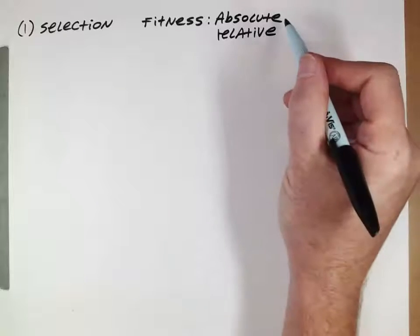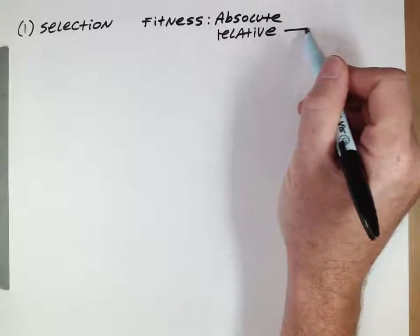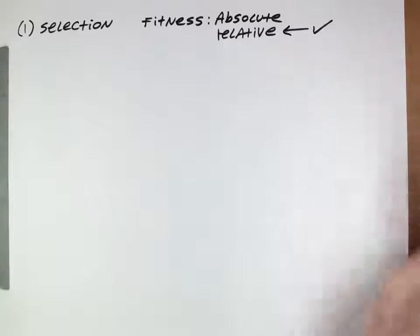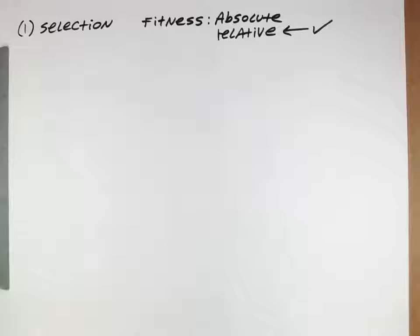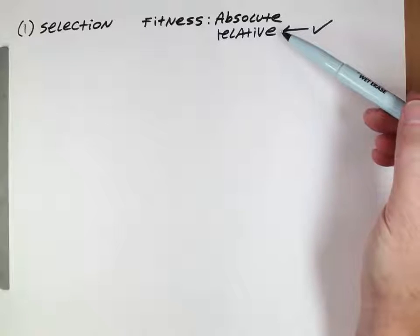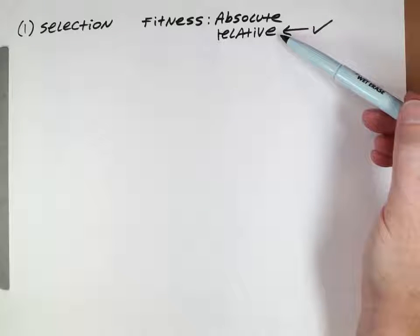While absolute fitness is important for ecology, we'll be using relative fitness in this part of the course. Relative fitness tells us how frequencies change within a population. In population genetics, we don't care about the size of the population changing — if we're only looking at frequencies within a population, relative fitness is all we need.